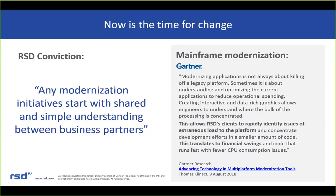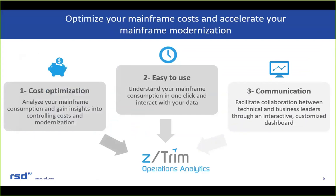This freed-up budget can then be allocated for other innovation and efficiency initiatives. The research note included a specific recommendation for Z-TRIM by Thomas Klenick as a tool to enable organizations to take these actions. The research letter is titled 'Advancing Technology and Multi-platform Modernization Tools,' published in August 2018 — we can provide that to you as well. To focus and optimize mainframe costs and accelerate modernization efforts, know your current state and gain insight on the greatest opportunities for optimization.